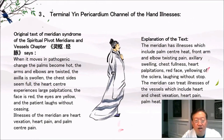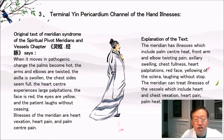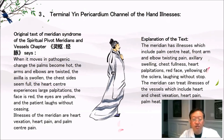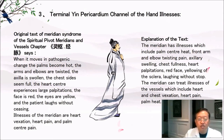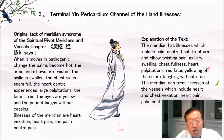Terminal yin pericardium meridian of the hand illnesses. Original text from the Spiritual Pivot: when it moves in pathogenic change, the palms become hot, the arms and elbows are twisted, the axilla is swollen, the chest sides seem full, the heart center experiences large palpitations, the face is red, the eyes are yellow, and the patient laughs without ceasing. Illnesses of the meridian are heart vexation, heart pain, and palm center pain. Explanation: illnesses include palm center heat, front arm and elbow twisting pain, axillary swelling, chest fullness, heart palpitations, red face, yellowing of the sclera, and laughing without stop. The meridian can treat illnesses of the vessel including heart and chest vexation, heart pain, and palm heat.